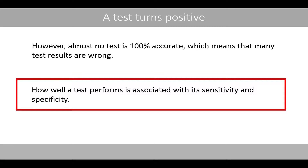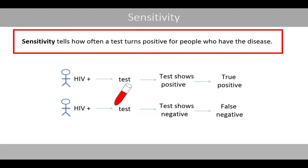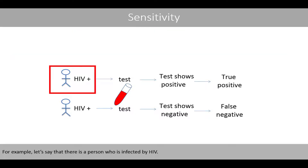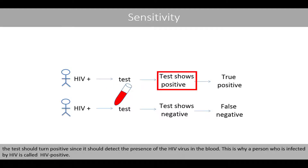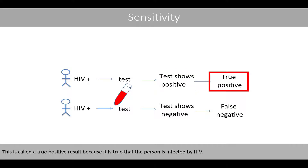How well a test performs is associated with its sensitivity and specificity. Sensitivity tells how often a test turns positive for people who have the disease. For example, if a person infected by HIV takes the HIV test, the test should turn positive since it should detect the presence of the HIV virus in the blood. This is called a true positive result because it is true that the person is infected by HIV.